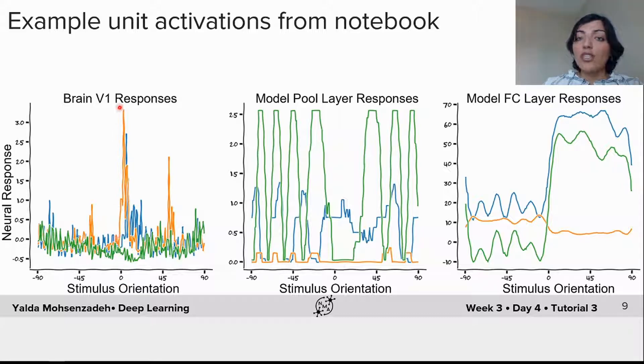For example, this orange neuron is highly selective to this specific orientation. Model units in pooling layer also show a similar property. For example, this green unit is selective to some specific orientations but not others.